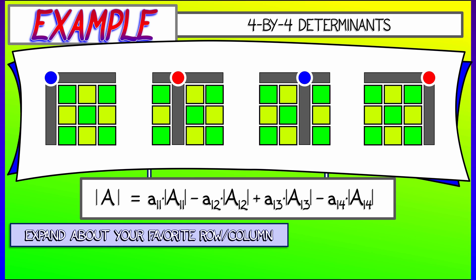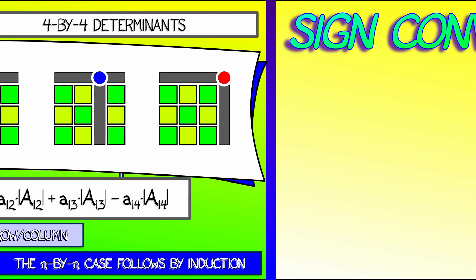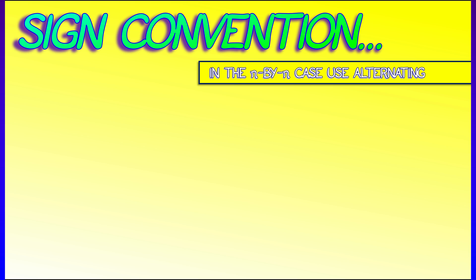For a 4x4 matrix, the determinant is given by a minor expansion formula, where you have to compute a bunch of 3x3 determinants. You can pick your favorite row or column. And once you have 4x4s down, you can do 5x5, 6x6, whatever you want, as long as you are careful to follow the sign convention and use those alternating signs in the minor expansions.